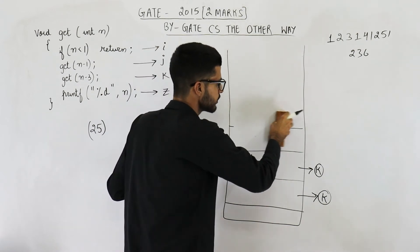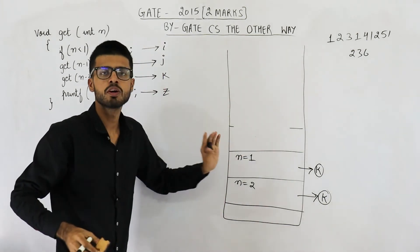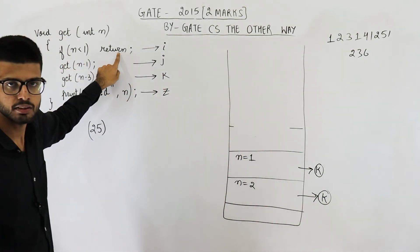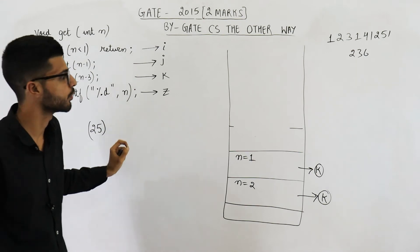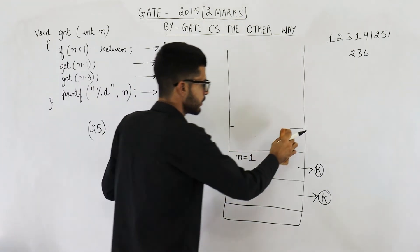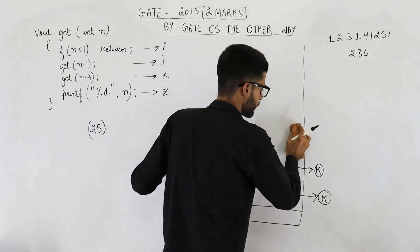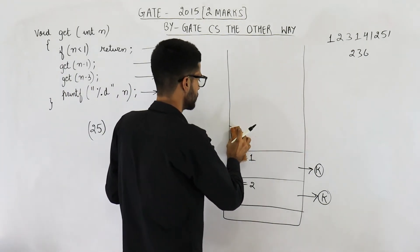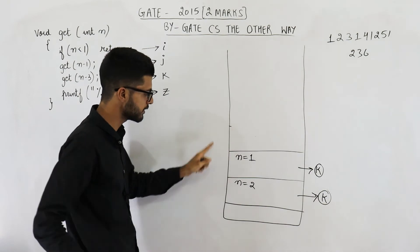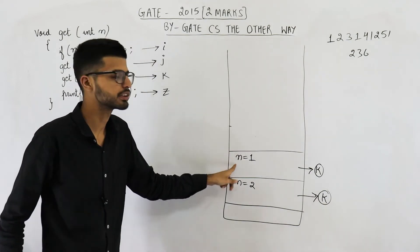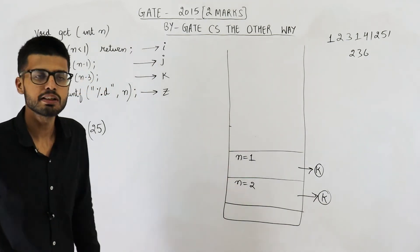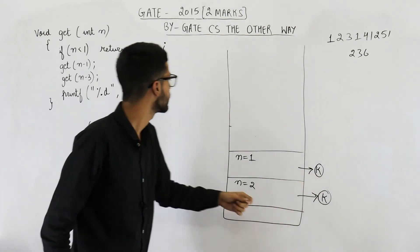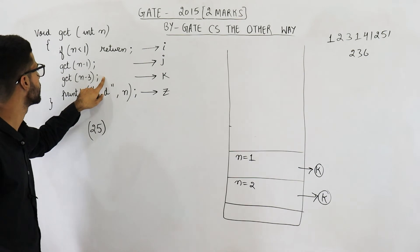This function returning means its activation record will be popped. Notice it is not going to print anything — it returns on the first line only. So the first function call has returned. We will come back to get(1) and resume from line k.